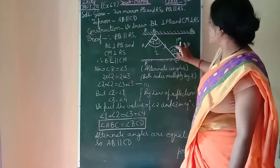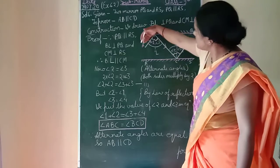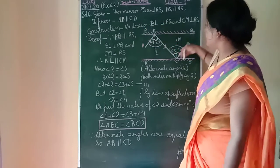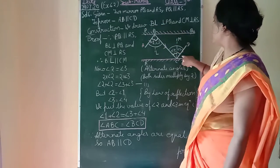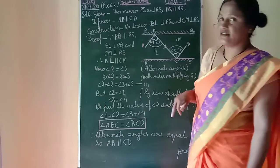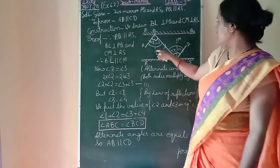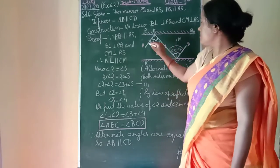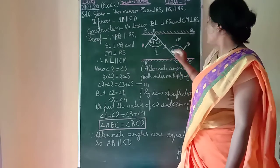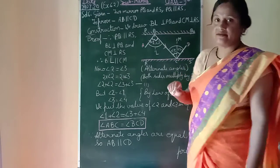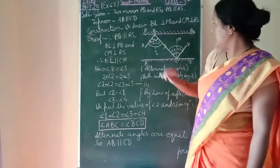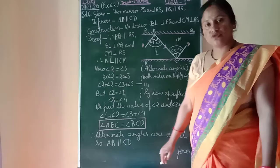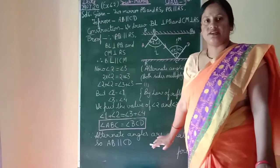Since angle ABC equals angle BCD, and these form a Z-shape, they are alternate interior angles. If alternate angles are equal, then both lines are parallel. Therefore, AB is parallel to CD. Proved.